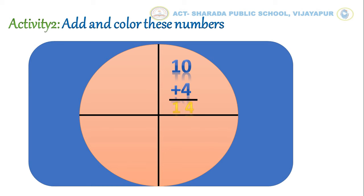0 plus 4 is equal to 4. 1 plus 1 as it is. Our answer is 14.